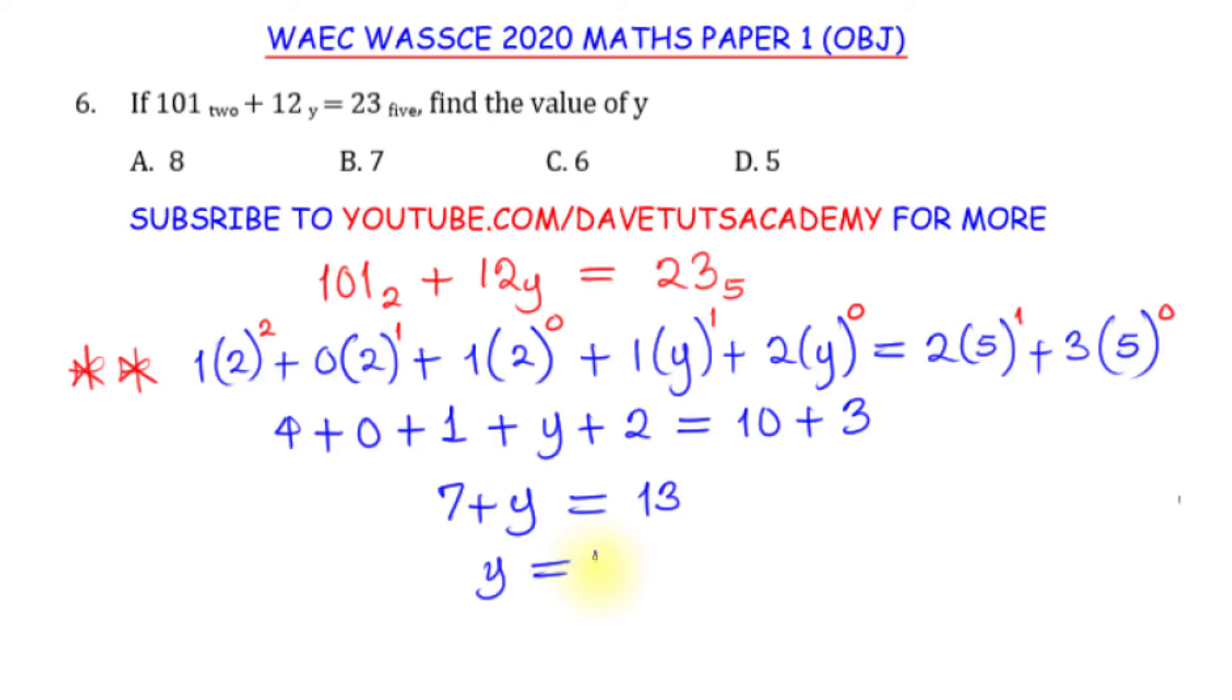We can say y equals 13. When 7 moves to the right hand side, we say minus 7, so that y is nothing but 13 minus 7, 13 minus 7 will give us 6.